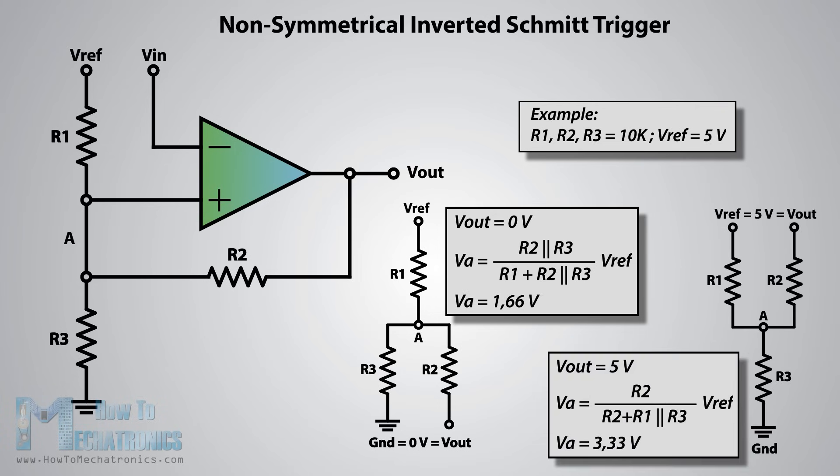Now with 5 volts at the output, the circuit will look like this. The value of the VA will be 3.33 volts. This means that the VIN input needs to rise above that value in order for the output to switch off to 0 volts.